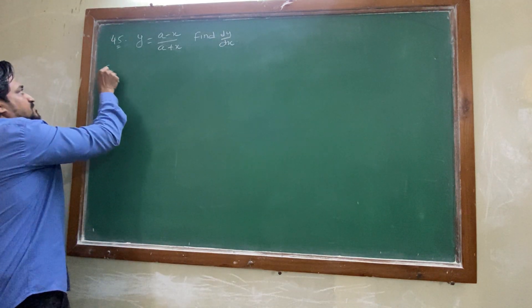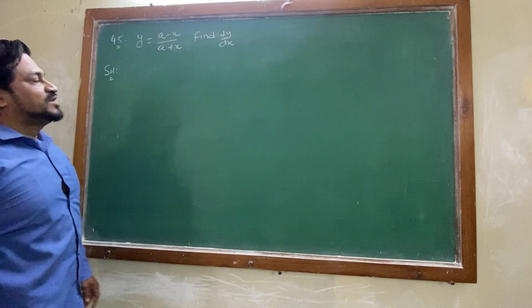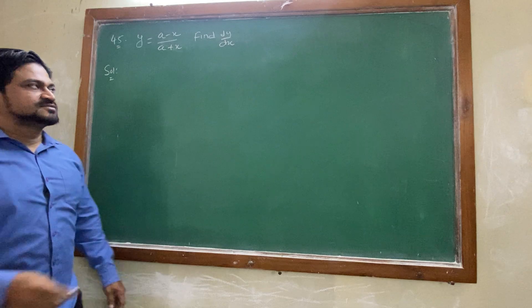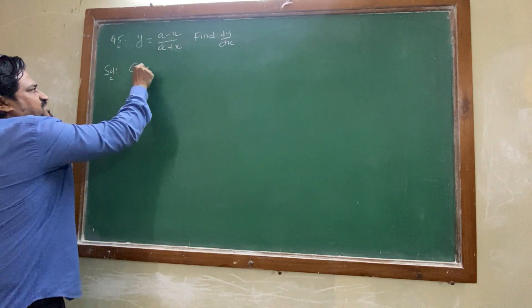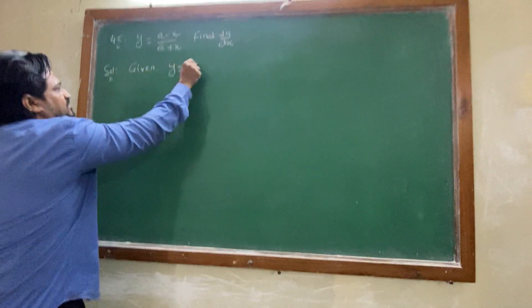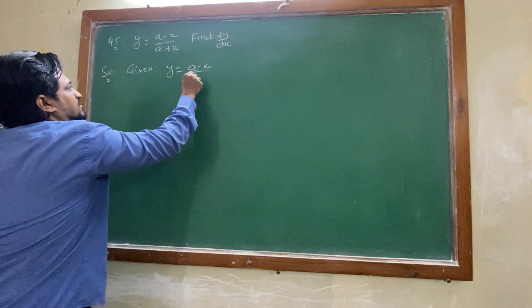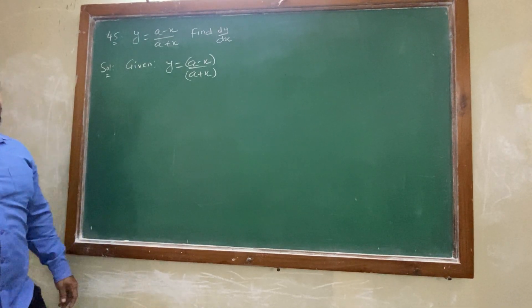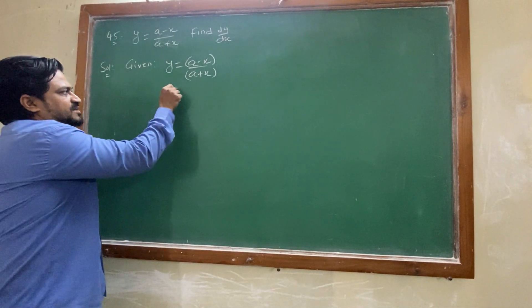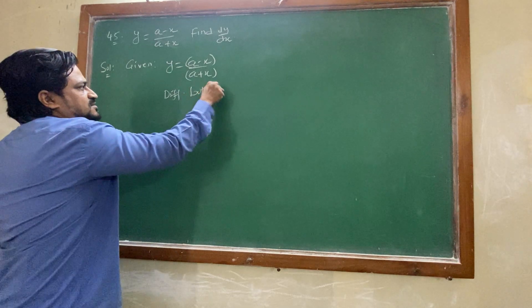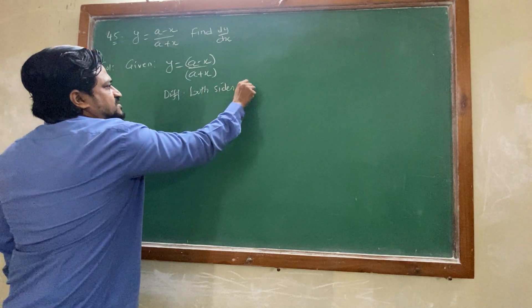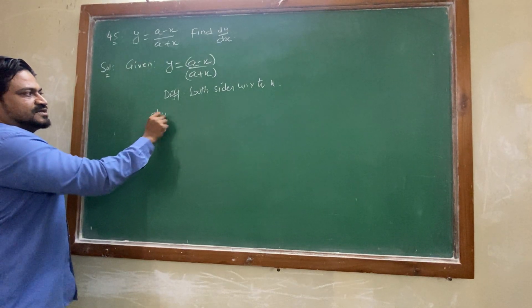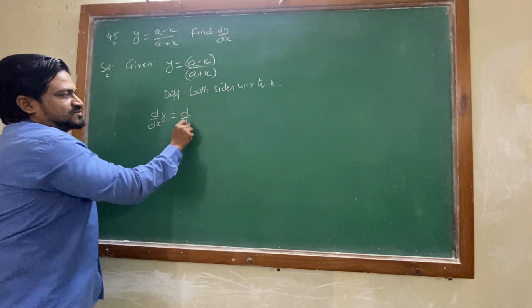Check this one. y equals to a minus x by a plus x, find dy by dx. So first, given whatever function is given to you, write down that one. Then differentiating both sides with respect to x. That means dy by dx we will take to left side and dy by dx we will take to right side.